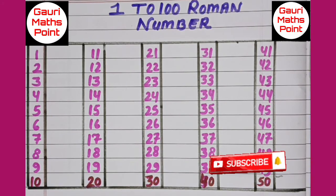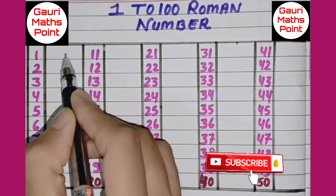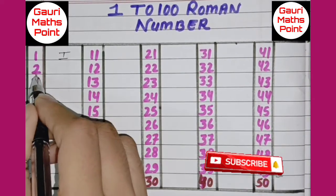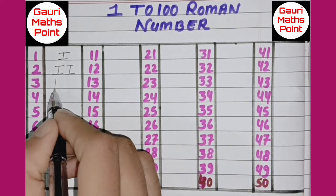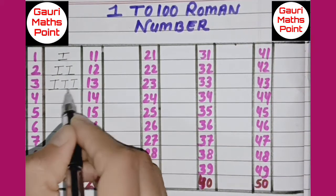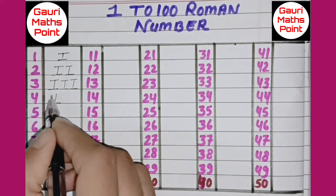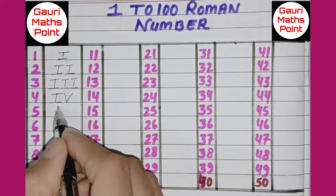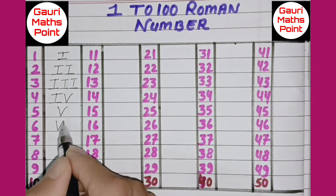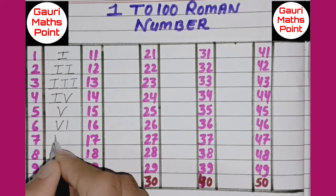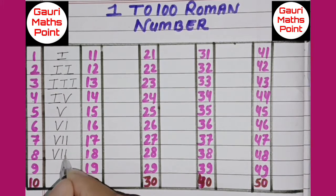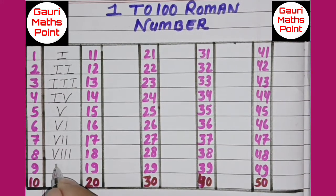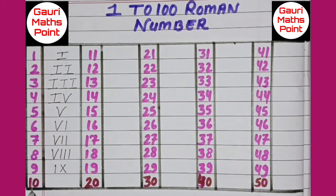1 to 100 Roman Numbers. 1 I, 2 II, 3 III, 4 IV, 5 V, 6 VI, 7 VII, 8 VIII, 9 IX, 10 X.